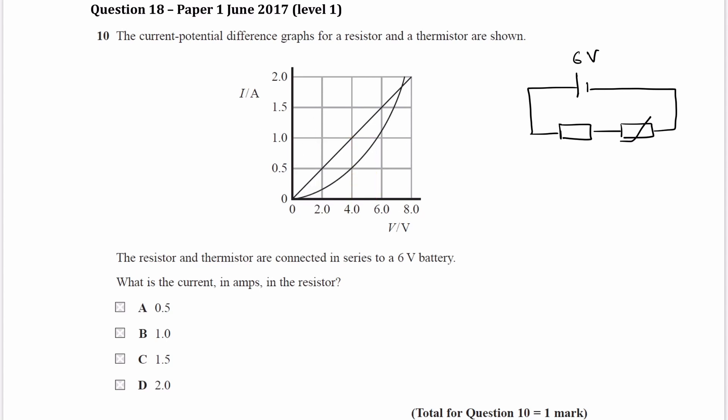So let's do 0.5 now. For 0.5, the voltage across the resistor is 2 volts, and the voltage across the thermistor is 4 volts, and those two things would add up to make 6 volts. So therefore the current must be 0.5. That's the only way that you can have the voltages adding up to make 6 volts.